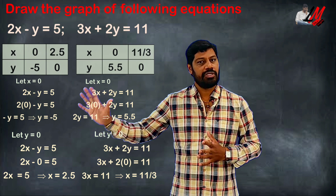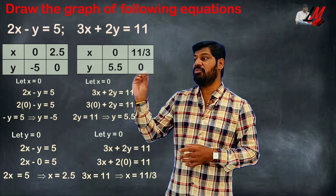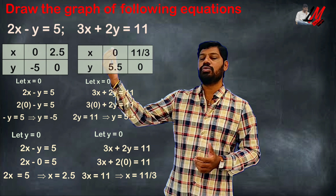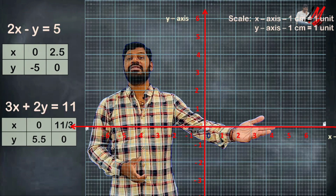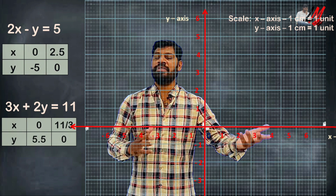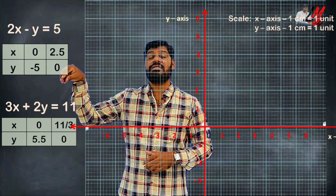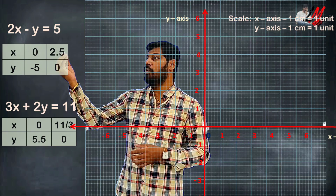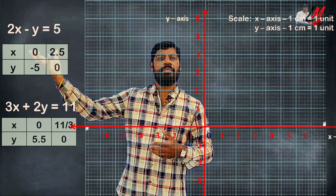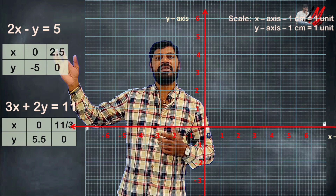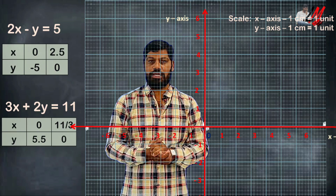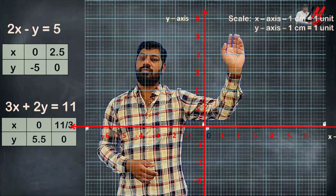We can see the calculations on the graph sheet. We must be very careful with the signs. On the graph sheet, we identify the x-axis, y-axis, the origin, and set the scale. Since our values are below 10, we use 1 centimeter equal to 1 unit on both the x-axis and y-axis as the clear scale.